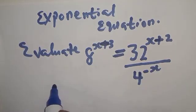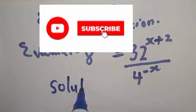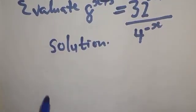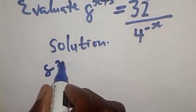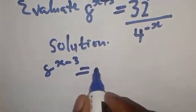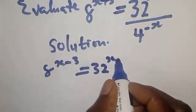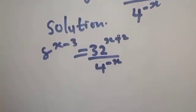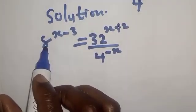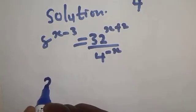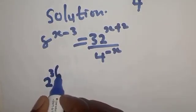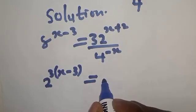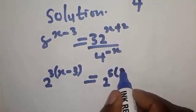So we have 8 raised to power x minus 3, equal to 32 raised to power x plus 2, over 4 raised to power minus x. Now 8 can be written as 2 raised to power 3, so we have 2 raised to power 3 into x minus 3. And 32 can be expressed as 2 raised to power 5, into x plus 2.